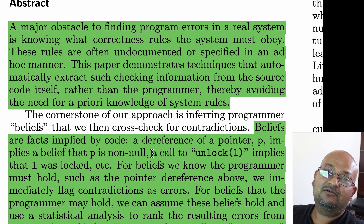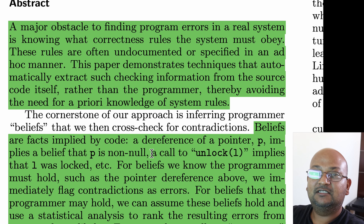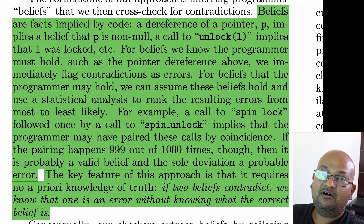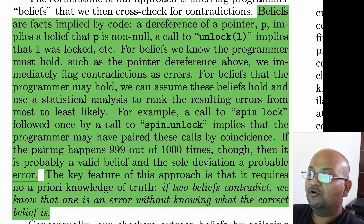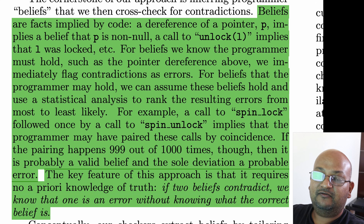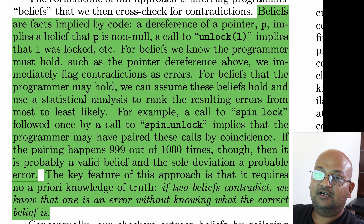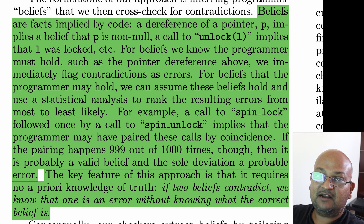It does not depend on a human programmer separately going and documenting all these correctness rules. Let's illustrate this idea with a simple concrete example. The goal is to infer from the code beliefs or facts that are implied by the code. If in our code base we see that a call to lock is almost always eventually followed by a call to unlock, and then a very small number of times — say one out of a thousand times — we see that the call to unlock is not there, we can reasonably infer that those small number of cases are likely a bug. The main insight is that we did not require anyone to specify the correctness rule that a lock must be followed by an unlock — it was inferred simply by noticing this pattern in the code.